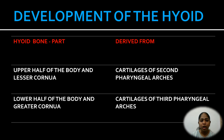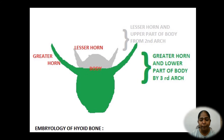Development of the hyoid bone: the upper half of the body and the lesser cornua are derived from the cartilages of the second pharyngeal arch. The lower half of the body and the greater cornua are derived from the cartilages of the third pharyngeal arch. We can clearly see this development — the upper half of the body and the lesser cornua forming from the second arch, and the greater cornua as well as the lower part of the body formed by the third arch.